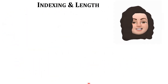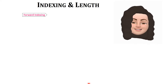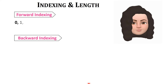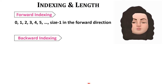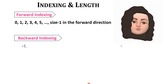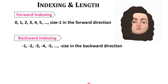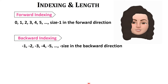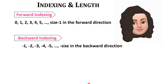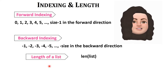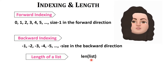Indexing in a list is the same as indexing in a string — forward indexing and backward indexing. Forward indexing begins from 0, 1, 2 till size minus 1 in the forward direction. Backward indexing begins from the last element at minus 1, then minus 2, minus 3, and so on till minus size in the backward direction. The length of a list is calculated using the len function — len(list_name) — which gives the number of elements.